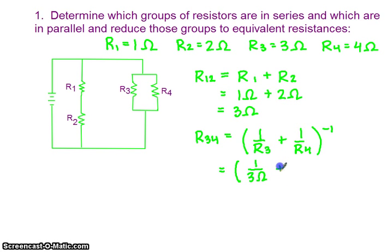So we have 1 over 3 ohms plus 1 over 4 ohms, and we inverse that quantity. That gives us a value of 1.7. We're not going to worry about significant figures here. We can round that at the end.